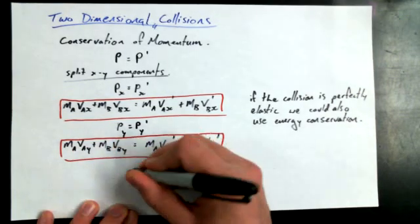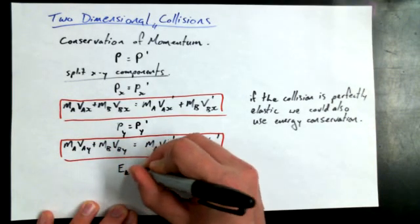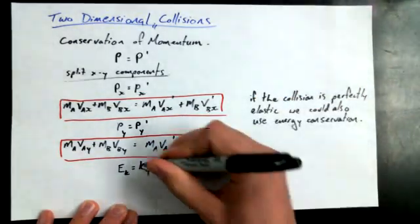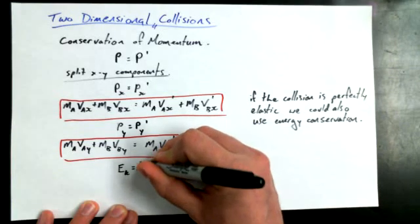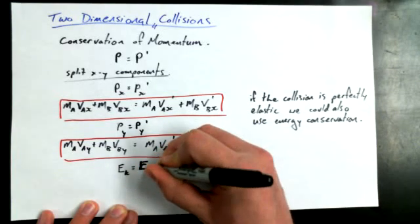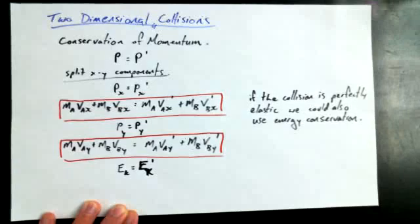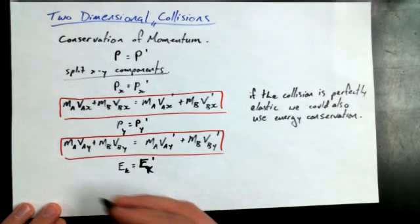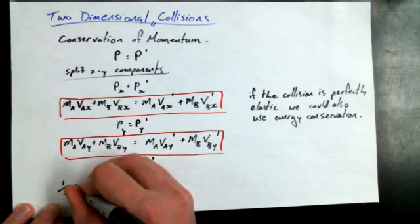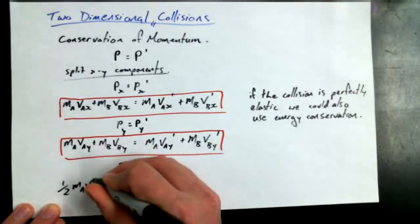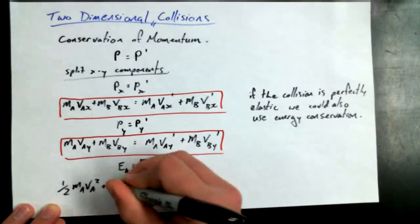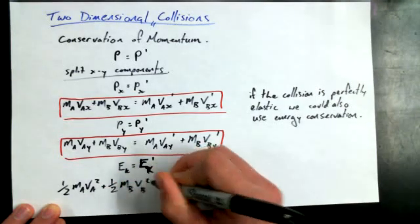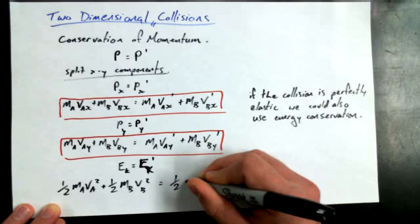Well, let's write out the equation anyway. We could say that EK is equal to EK prime. This is for an elastic. One-half MA VA squared plus one-half MB VB squared equals one-half in the prime version.